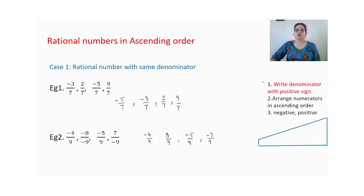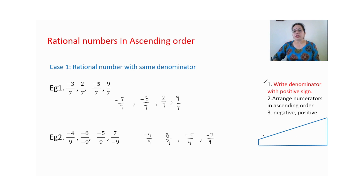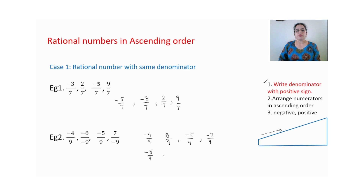First step is over. For the second step, you have to arrange the numerators in ascending order — smaller to greater. Smaller numbers are negative. So first we arrange negative numbers. The smallest negative integer is minus 5 upon 9, then minus 4 upon 9. Both negative numbers are written.